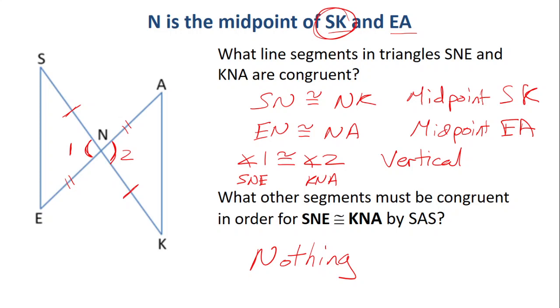Now, remember what I said yesterday about each statement only gives us one piece of information. I said, like, N is the midpoint of SK and EA, so this gives us one thing. But this time it gave us two things, and that's because the sentence is compound. It's a compound sentence.